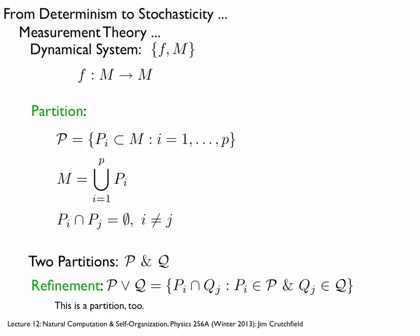Now some terminology. First concept: partitioning. We take the state space and break it into cells P_i, which are subsets of the state space. They form a partition — their union covers the entire state space and they don't overlap. It's a complete covering. There are many partitions of the state space, so choosing which one is a design issue. Think of this as choosing a measuring instrument — the Hewlett-Packard 1020 analog-to-digital converter, for example.